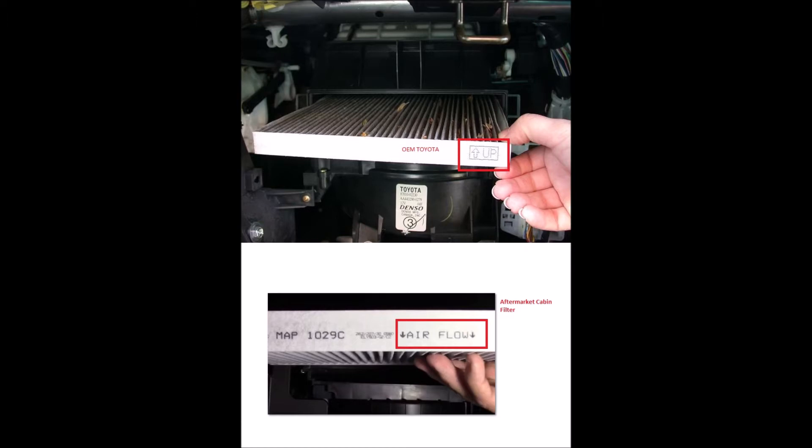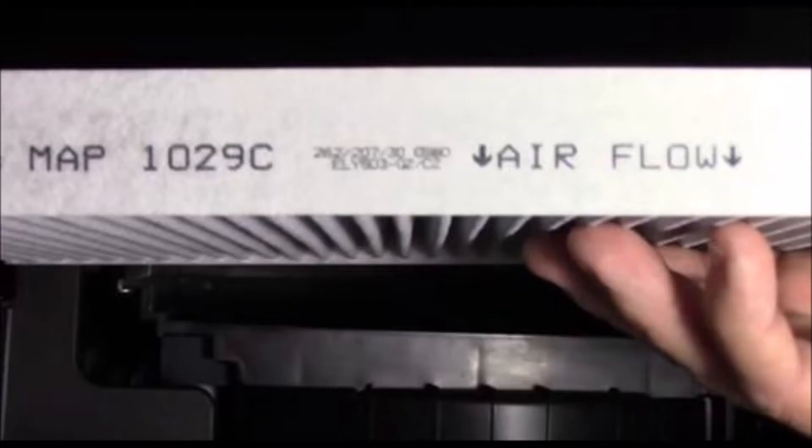Similar to the example picture right here, most aftermarket cabin air filters do not have 'up' arrows, but they have airflow arrows instead. And all of those airflow arrows should point down when you're installing the air filter.